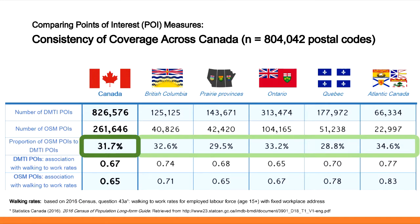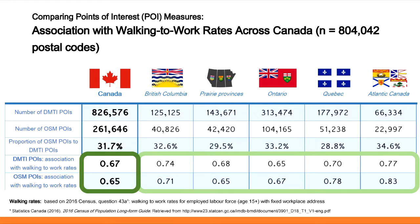Two things we checked before using OSM POI data: first, the consistency of coverage across Canada. Across the country, the proportion of OSM POIs to DMTI POIs is about 32%, and that doesn't change much depending on which province you look at. We also did a similar analysis in Quebec looking at urban, suburban, and rural environments. OSM and DMTI are fundamentally different datasets — this doesn't mean OSM is incomplete, it just means OSM is trying to show different points of interest, and it does that in a consistent way. Both the DMTI and OSM POIs are very strongly associated with walking to work across Canada, with no clear winner between them at the regional level.